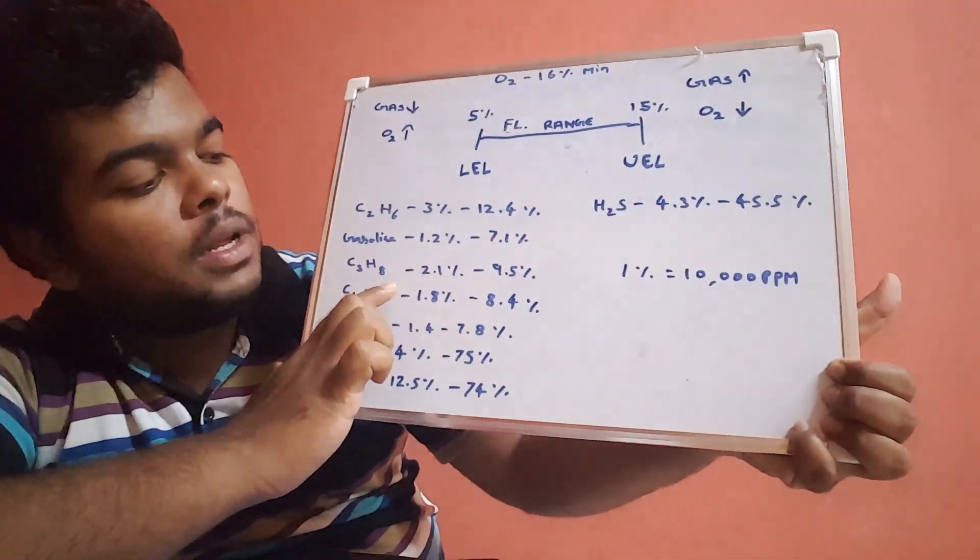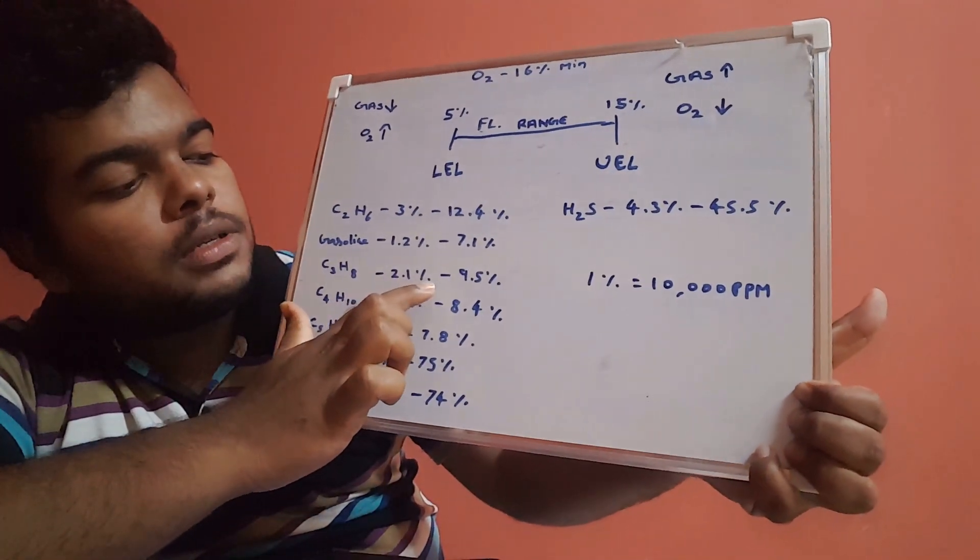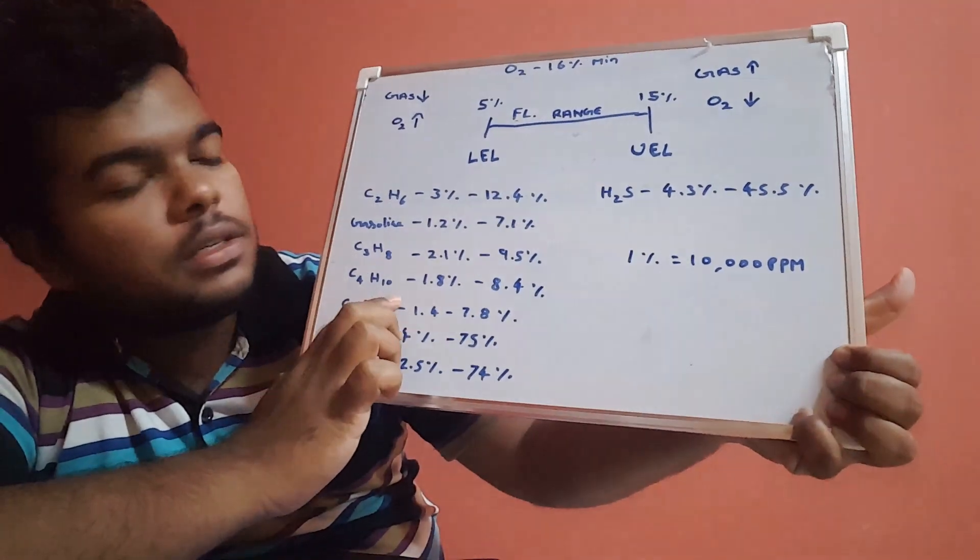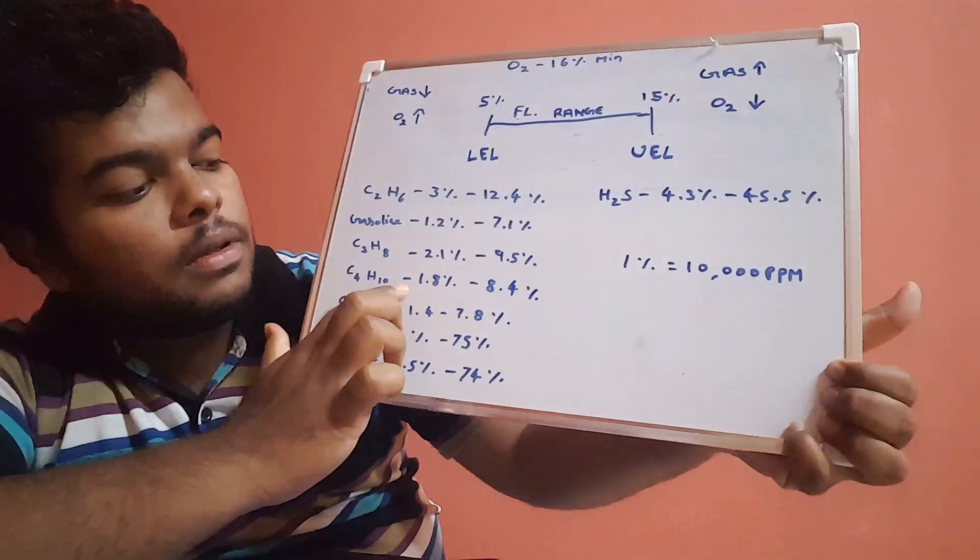C3H8, which is propane, has 2.1 percentage to 9.5 percentage.